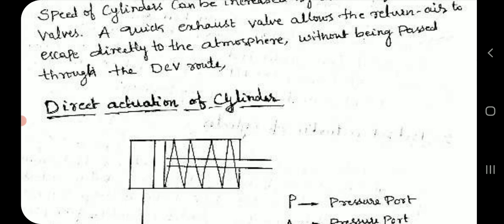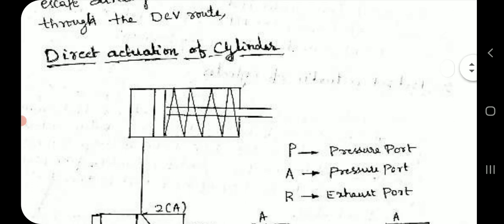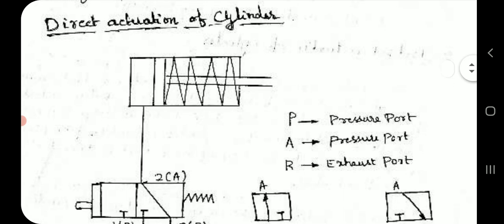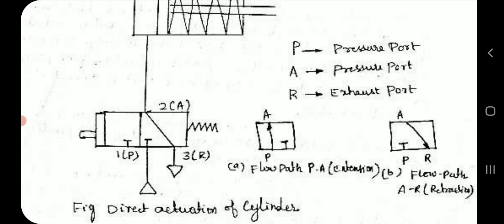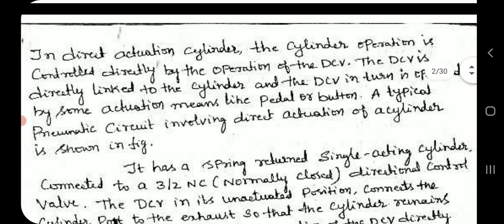In direct actuation of a cylinder, the pressure port is P, the actuator port is A, and the exhaust port is R. The extension flow path is P to A, and the retraction flow path is A to R.